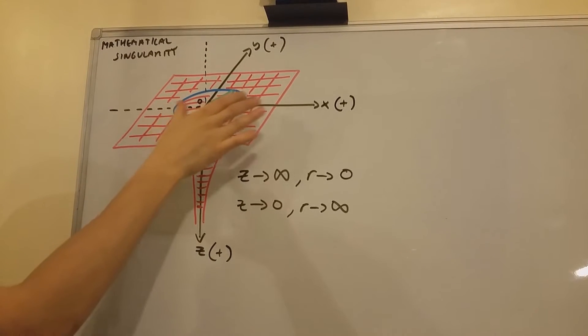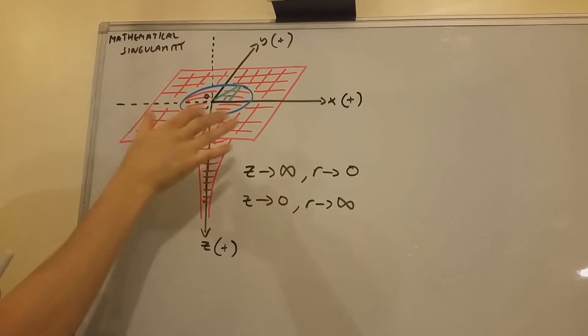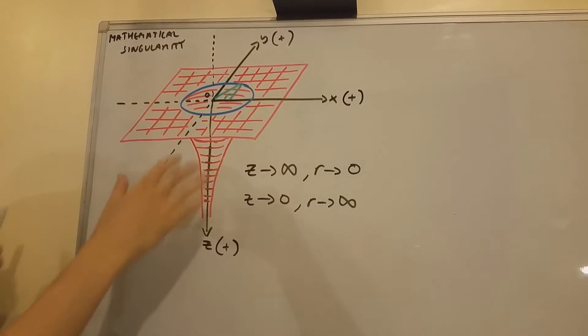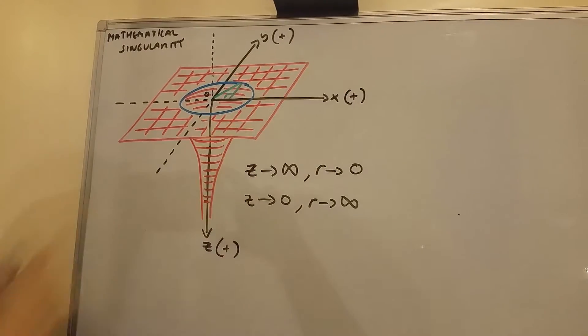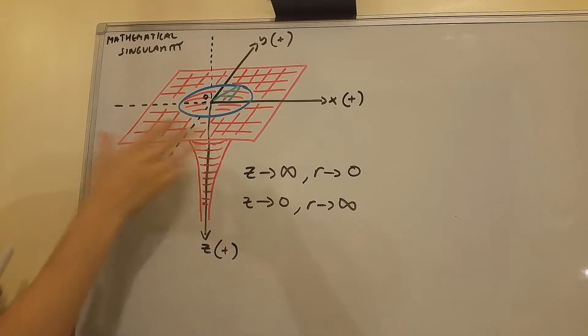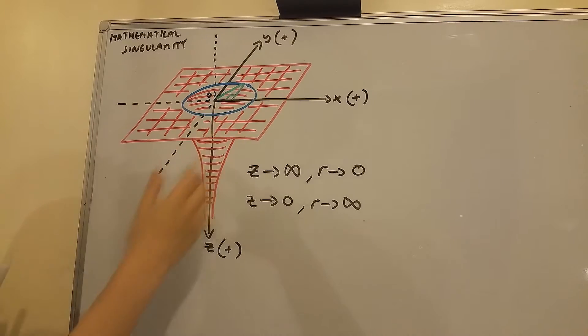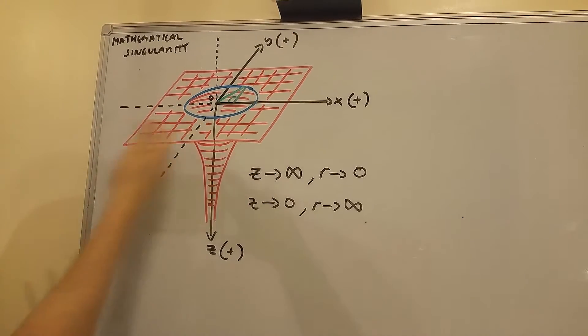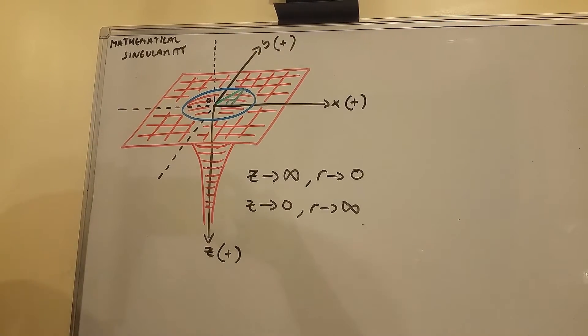So these concentric circles near the plane z equals zero get larger and larger, until they almost fill the space of this two-dimensional yx plane itself.